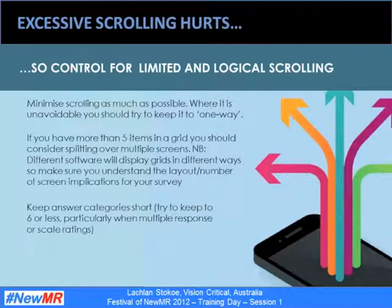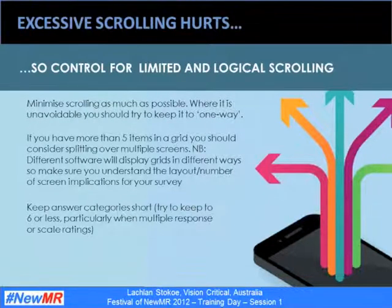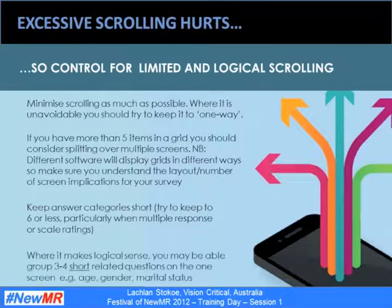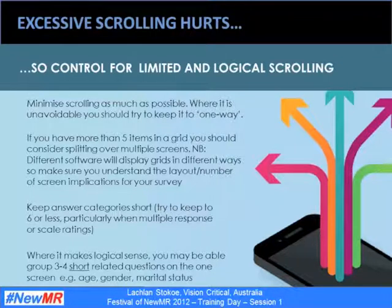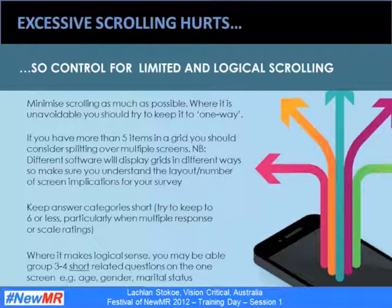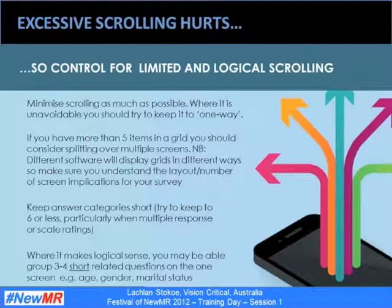If the person doesn't scroll, they may forget about what they've rated at a previous attribute. If they are scrolling up and down, it becomes laborious to constantly go back and check what they've answered. Where it does make logical sense, you may be able to group three or four short related questions onto one screen — for example, age, gender, marital status. The time saving of avoiding four separate screens and associated loading times is worth it, given there's little risk of answers being influenced by the need to scroll.